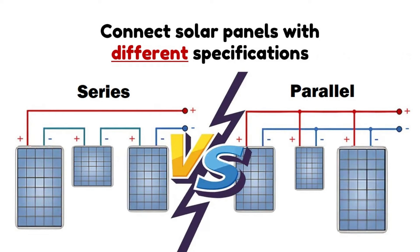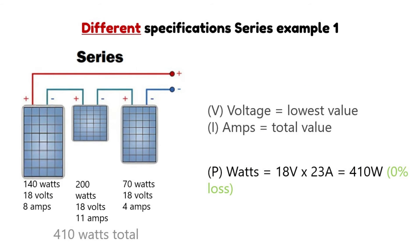And now finally onto what this video is actually about, and that is connecting solar panels with different specifications in series and parallel and which is the winning way to do it. Let's begin with series and the first example. As you can see here we have three different solar panels: one of 140 watts, one of 200 watts, and one of 70 watts, and we're going to connect them in series.